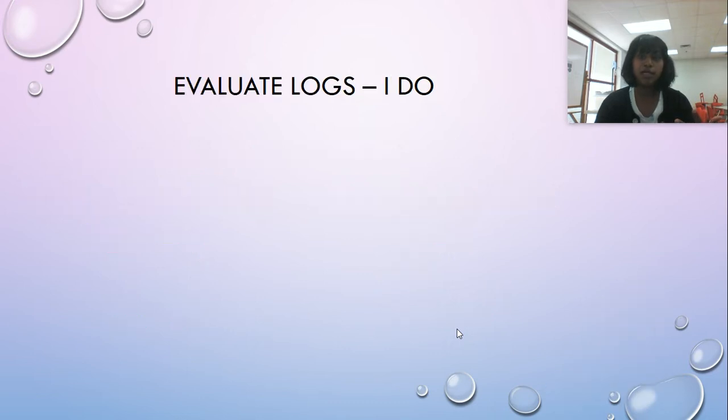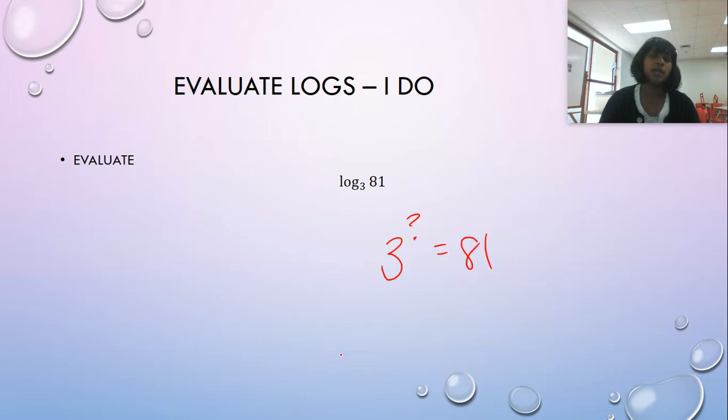So let's go ahead and move on to evaluating them. Pretty simple. Log base three of 81. This would be the same as saying three to the what equals 81. Three to the what is my next power? I think it's to the fourth. So let's check that: three, nine, 27, 81. Very good. So then my answer here is simply four.